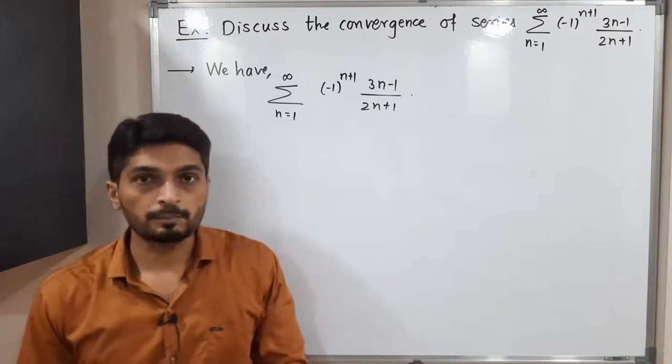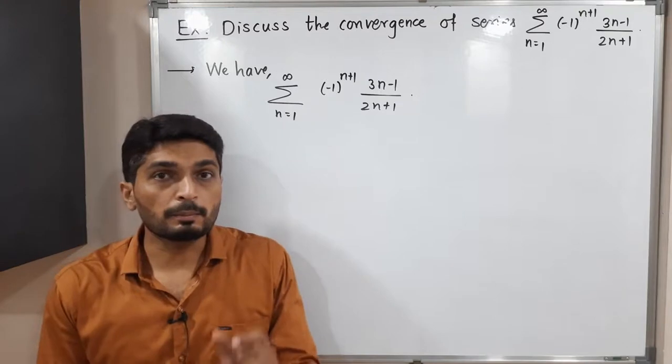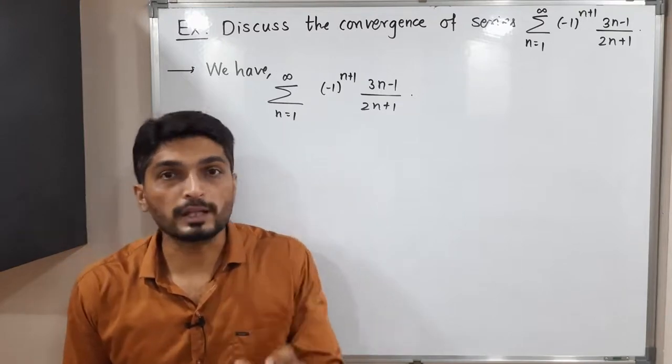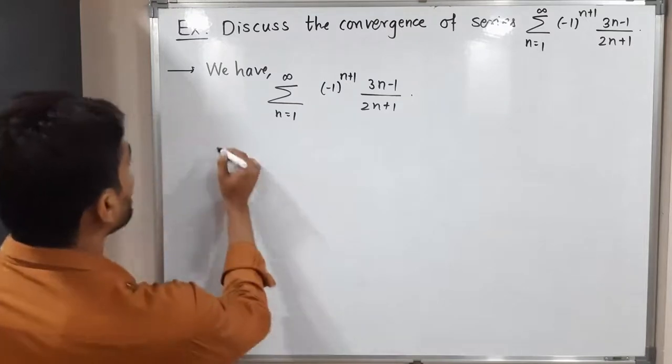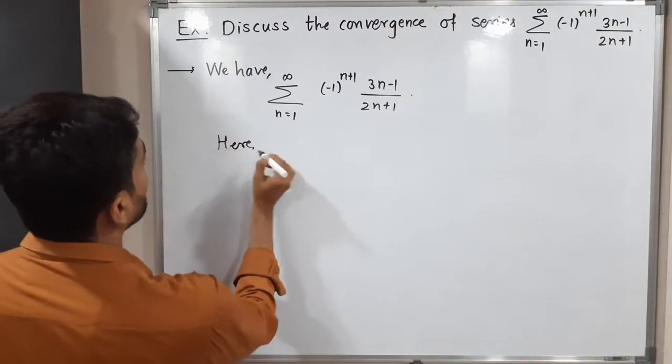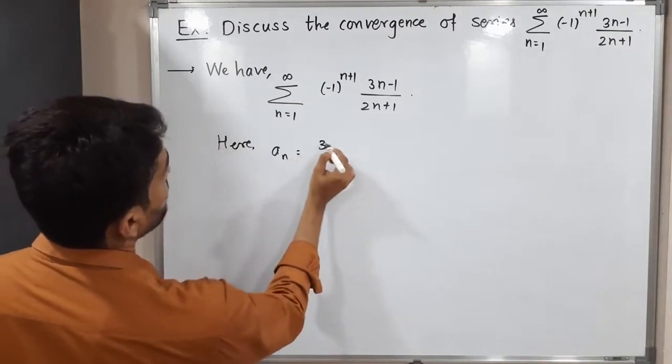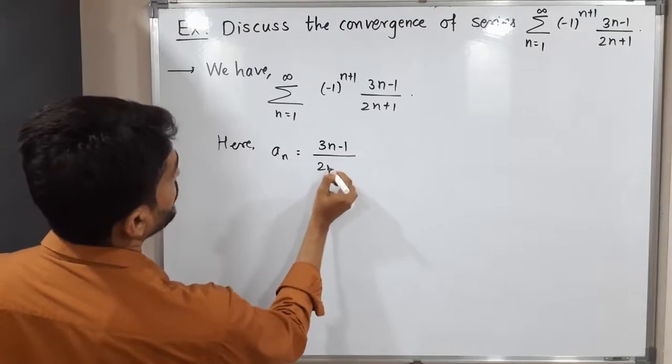Okay, I have written the given series here. So in Leibniz theorem, the multiple of minus 1 raised to n plus 1 is normally denoted by a_n. So what is our a_n? Let me write here. Here, a_n is 3n minus 1 upon 2n plus 1.